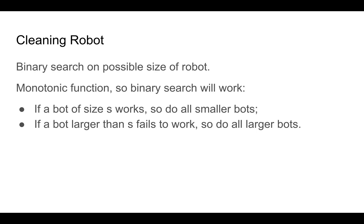Once we have this information, we can perform binary search on the possible size of the robot. Because whether or not a particular robot will work is monotonic in the size of the robot, binary search is justified here. Specifically, if a bot of size s works, so do all smaller bots. But if a bot of size s does not work, then larger bots also will not work.